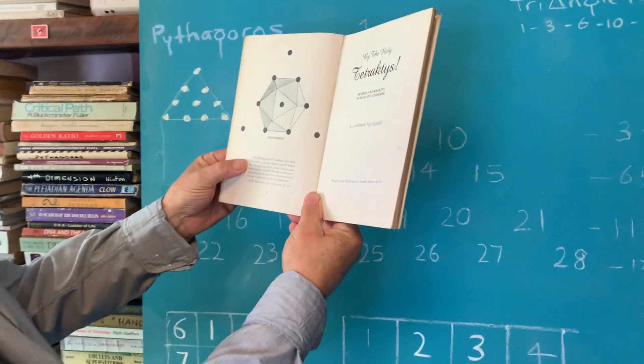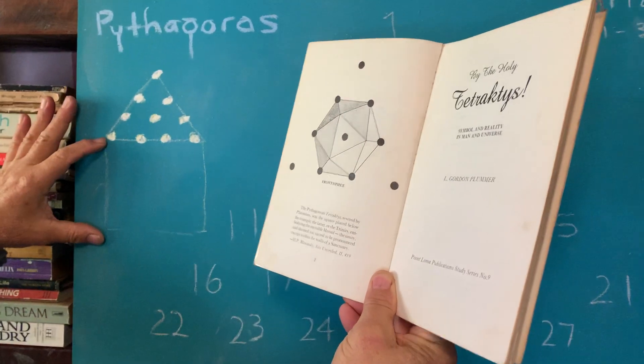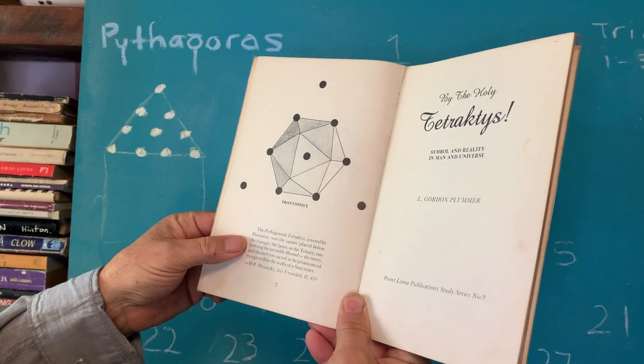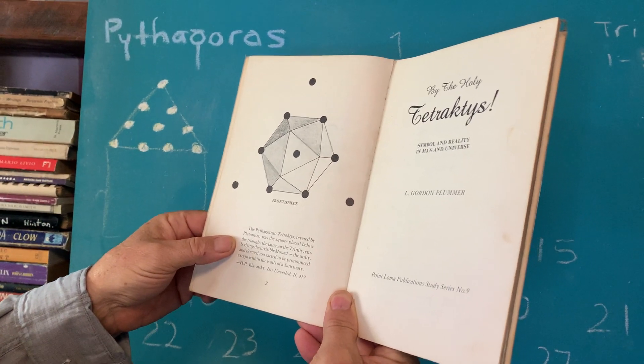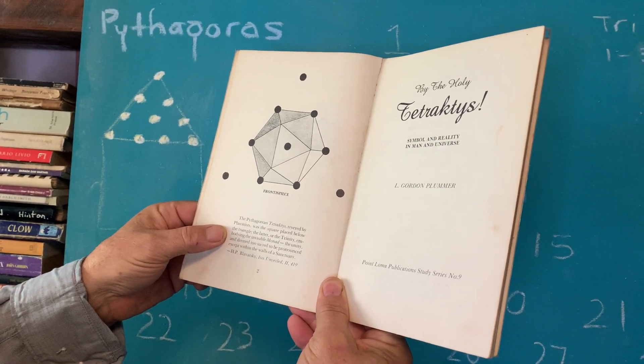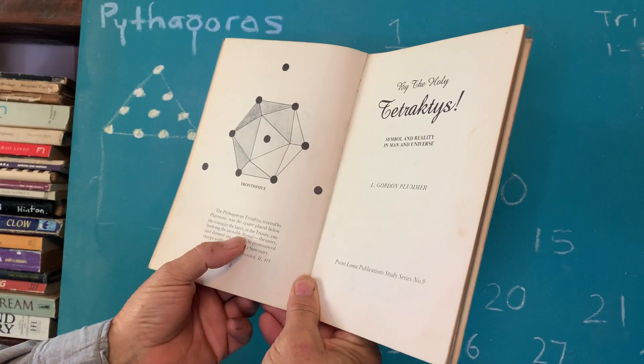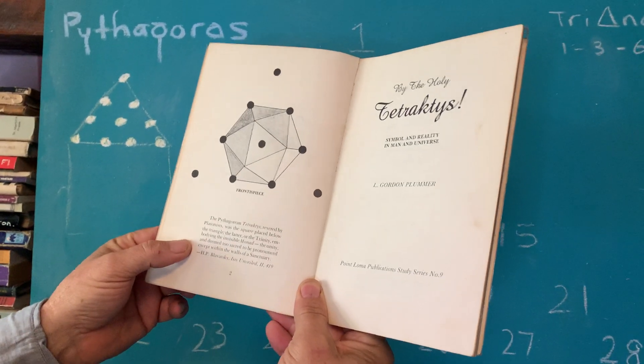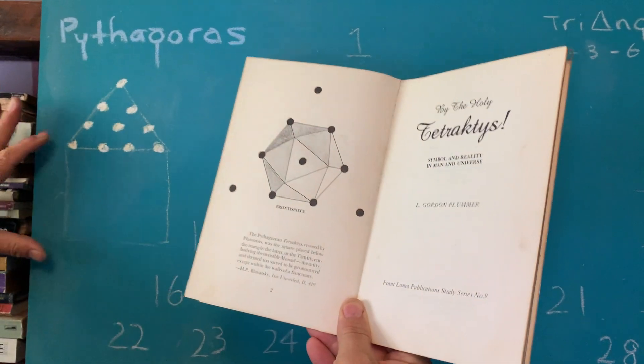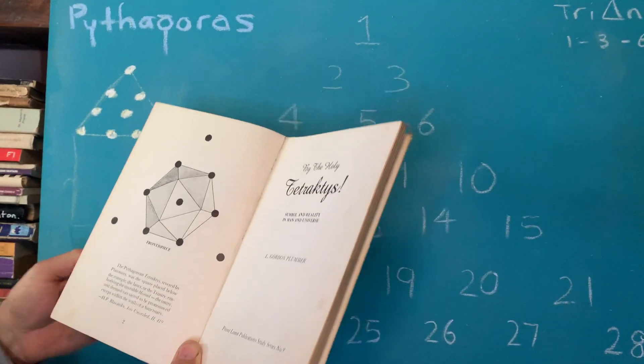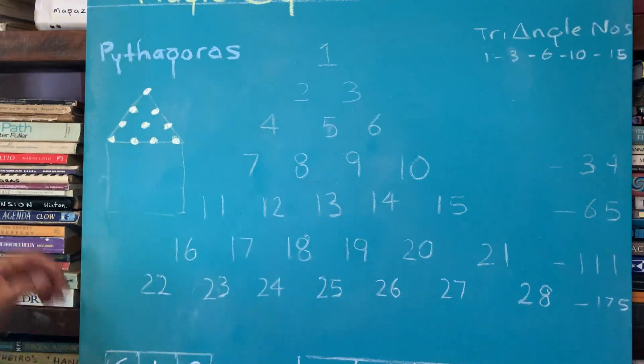The Pythagorean Tetraktys was revered by the Platonicists. These were the people that studied Pythagoras and they had the square below the triangle. The triangle and then the trinity embodying the invisible monad. Monad is like the god, the one, the unity. And it was deemed so sacred that you couldn't pronounce this unless you're in the walls of a sanctuary. So that was by Madame Blavatsky.